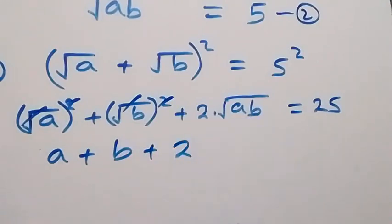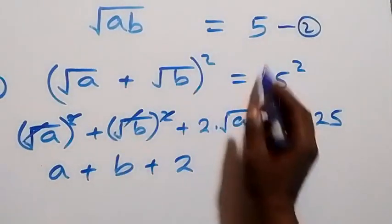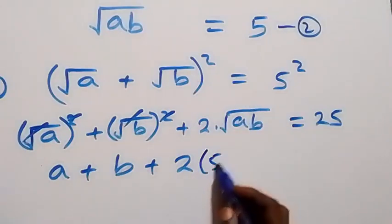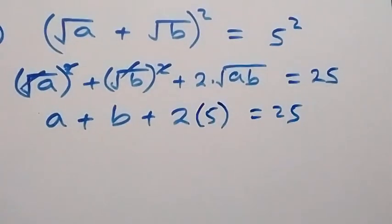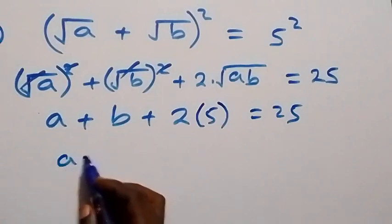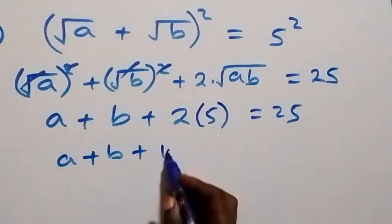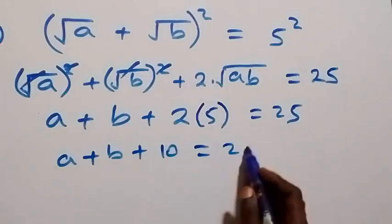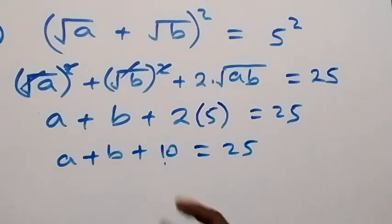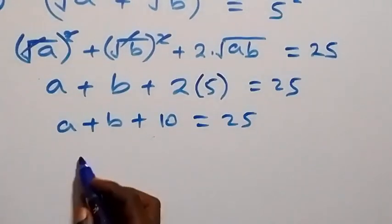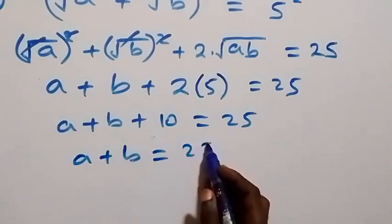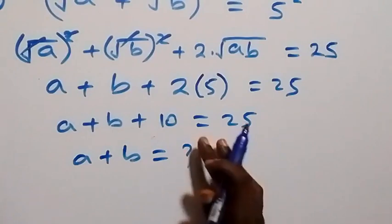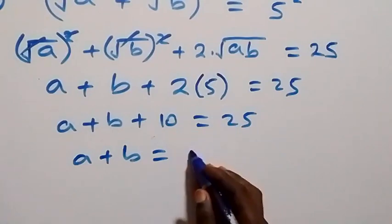Root ab from equation two is the same as five, so times five here equals twenty-five. That gives us a plus b plus ten equals twenty-five. Taking ten to the other side, it becomes minus, so we have a plus b equals twenty-five minus ten, which is fifteen.